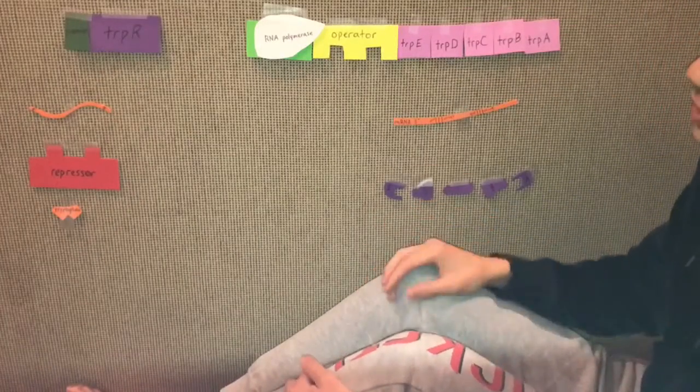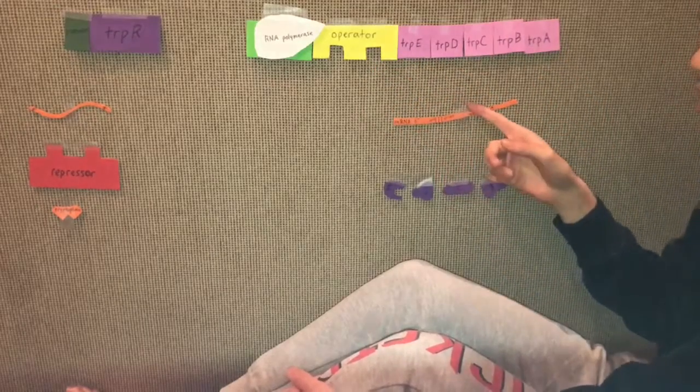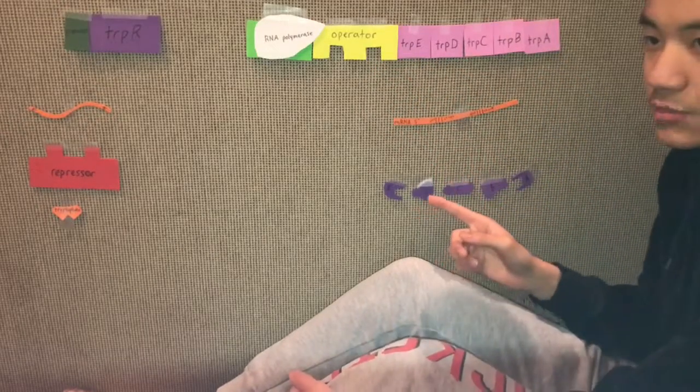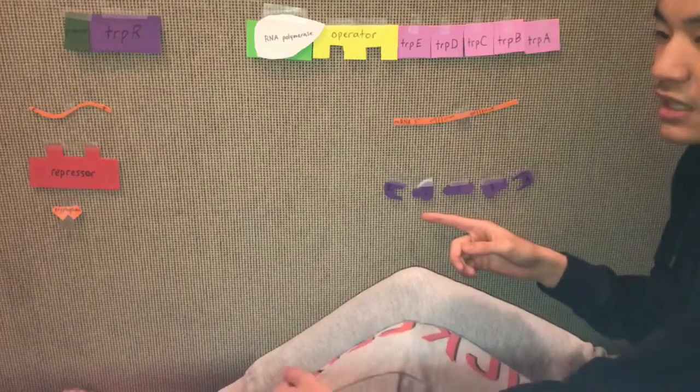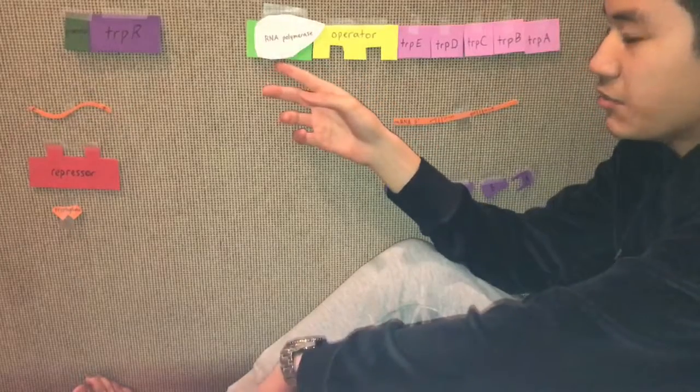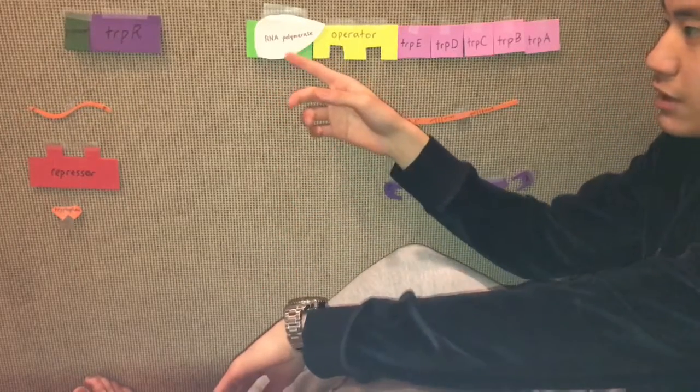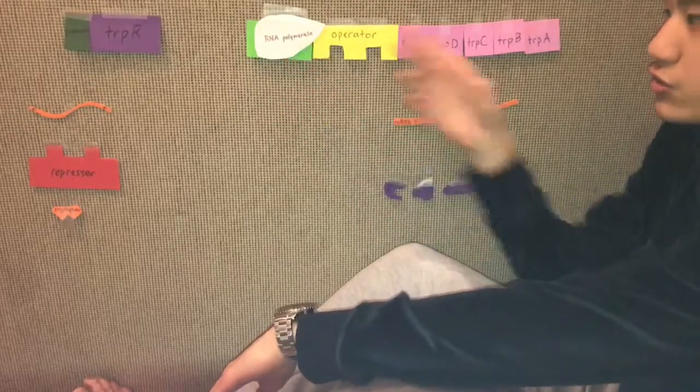The trp operon consists of a promoter, an operator, and the genes involved in the transcription of mRNA, which transcribes the polypeptide subunits that make up enzymes that allow for the synthesis of tryptophan. The promoter also has a TATA box, which indicates where RNA polymerase binds to the operon and begins to transcribe the gene.